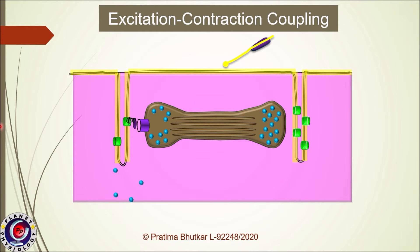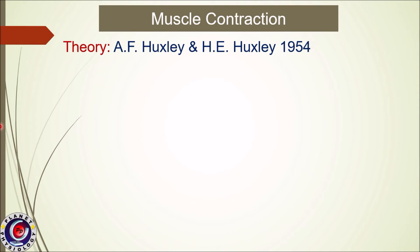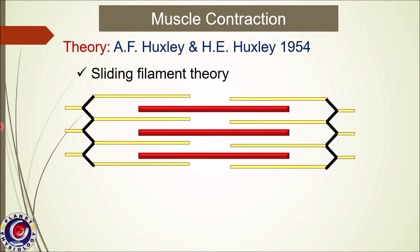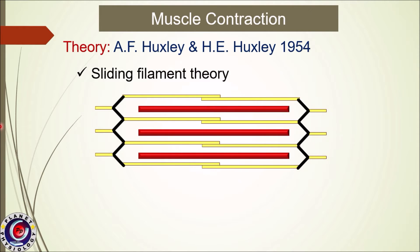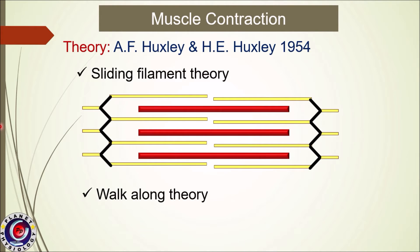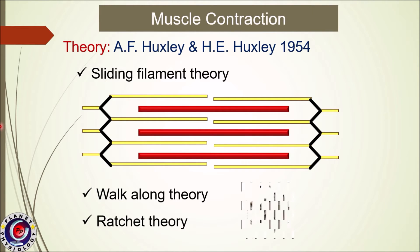Now let us study the mechanism of muscle contraction. The theory of muscle contraction was put forth by A.F. Huxley and H.E. Huxley in 1954. This theory is called the sliding filament theory, as during contraction actin filaments slide over myosin filaments. It is also called the walk-along theory because myosin cross-bridges appear to walk along the actin filament. As this movement appears like a ratchet, this theory is also called the ratchet theory.